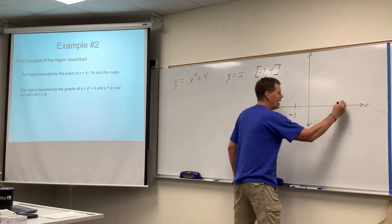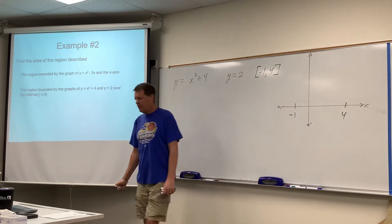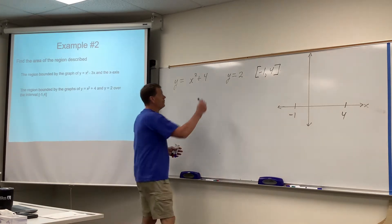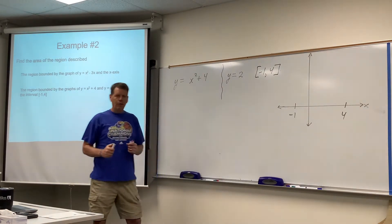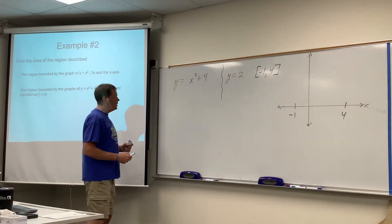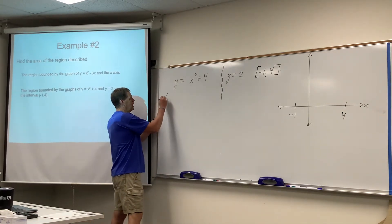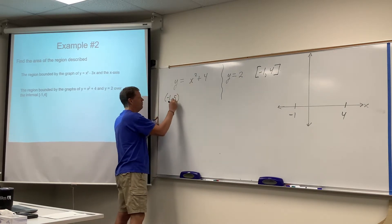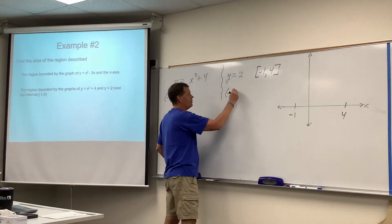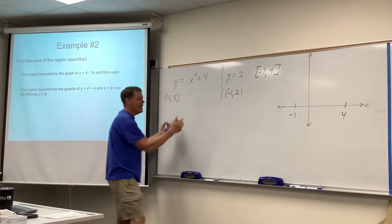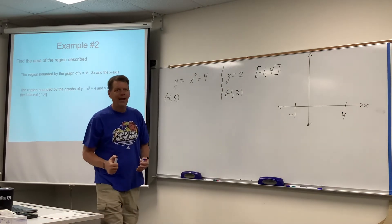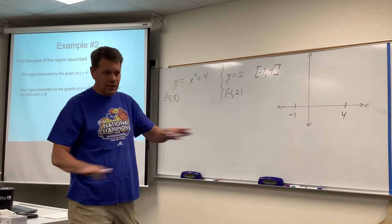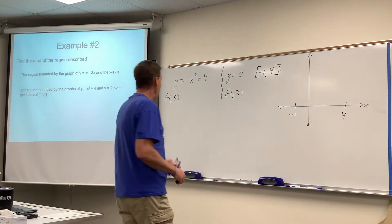So we're defining basically for you the interval on the X axis from negative one to four. All right, to further, I hope not complicate, but to confirm things, if you wanted to make your picture somewhat accurate, you could start with the negative one, and if you put that in here, negative one squared is one plus four would be five, and negative one plugged in for X here would give you two.